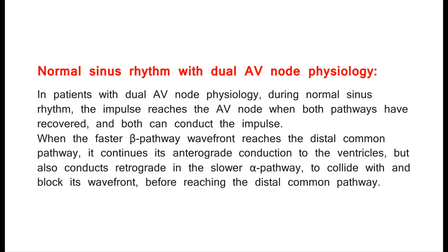In patients with dual AV node physiology, during normal sinus rhythm, the impulse reaches the AV node when both pathways have recovered and both can conduct. When the faster beta pathway wavefront reaches the distal common pathway, it continues anterograde conduction to the ventricles but also conducts retrograde in the slower alpha pathway, colliding with and blocking its wavefront before it reaches the distal common pathway.